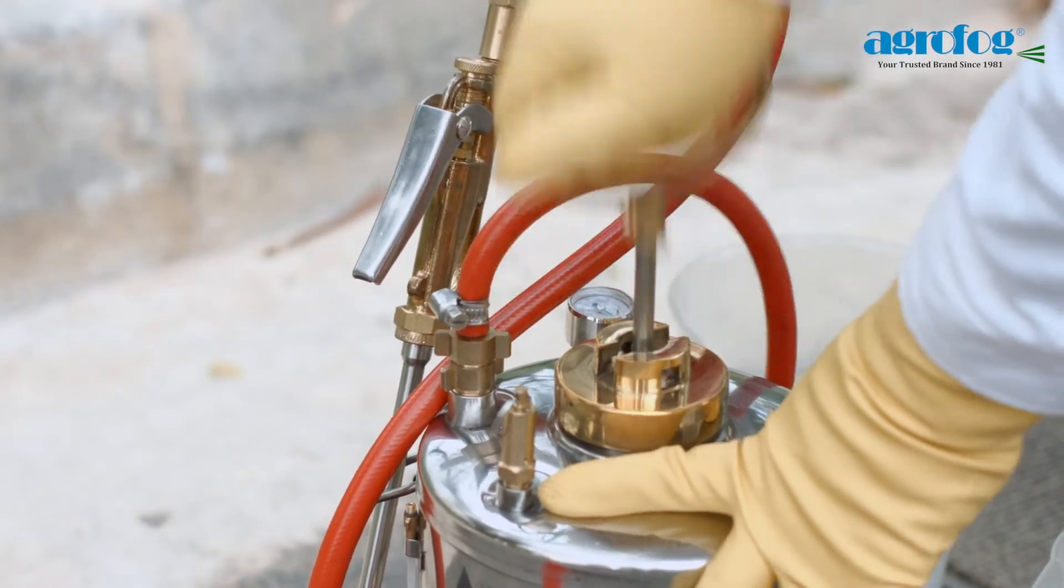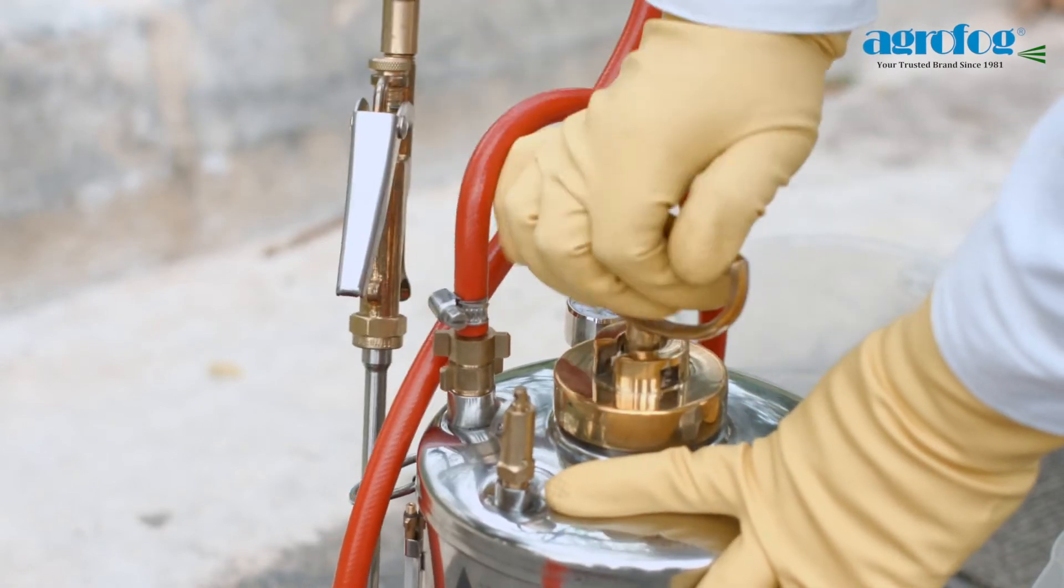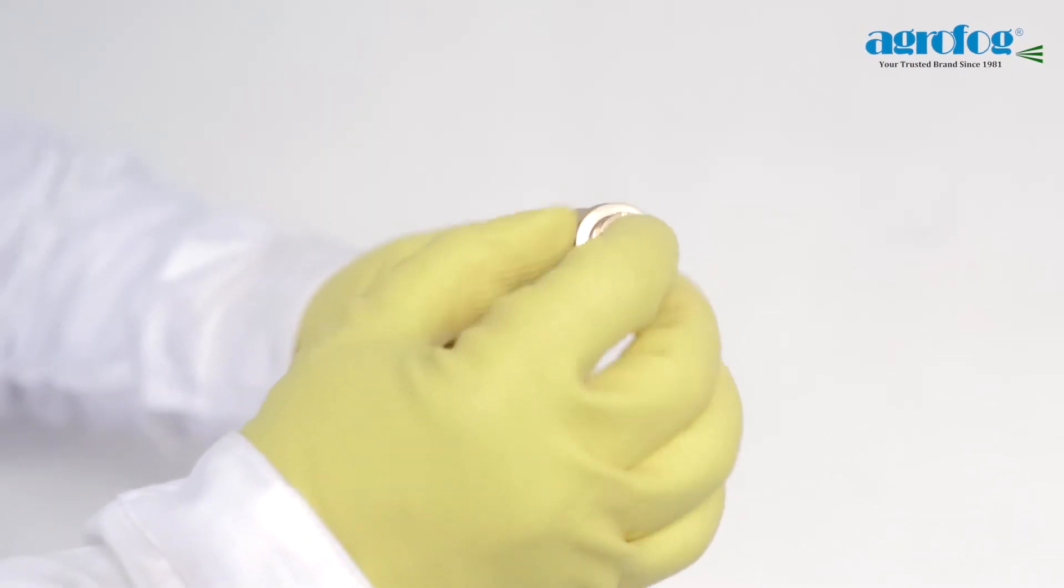Pressurize the tank by pressing the plunger handle. 25 to 35 psi requires about 15 to 18 strokes.